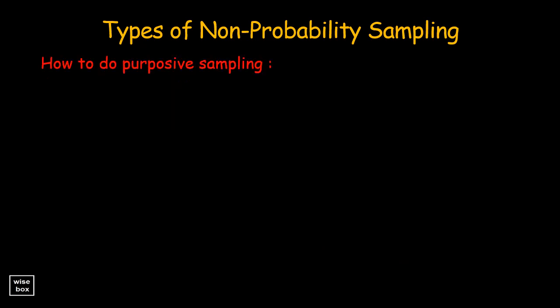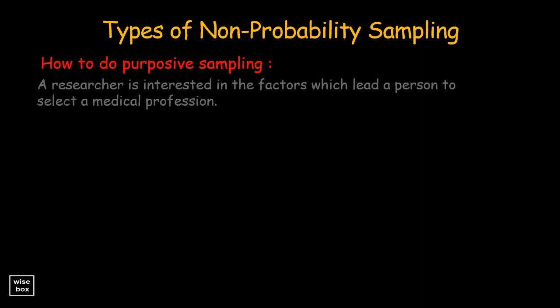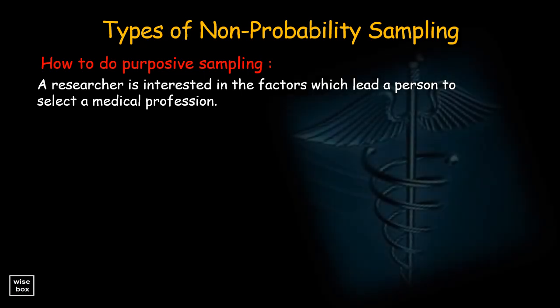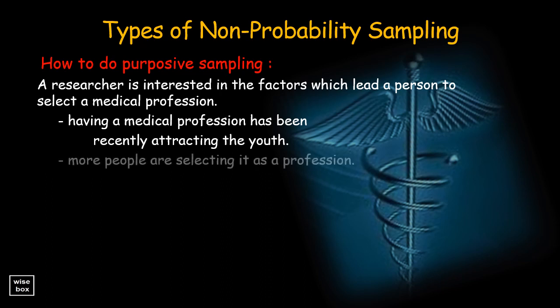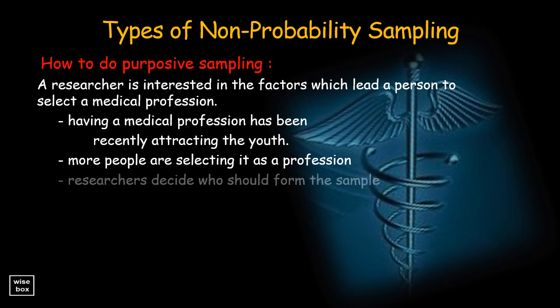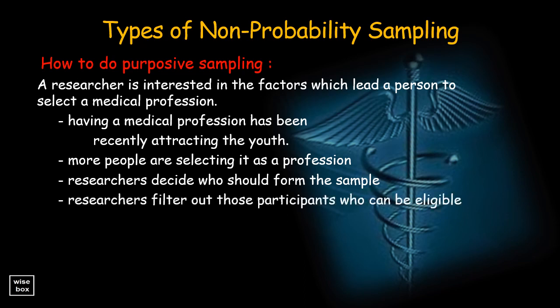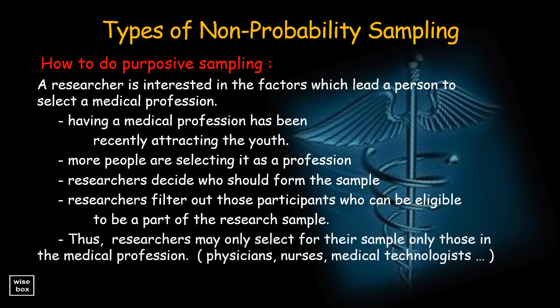Here's how to do purposive sampling. Consider a scenario where a researcher decides to understand what factors lead a person to select a medical profession. Having a medical profession has been recently attracting the youth, and more and more people are selecting it as a profession. The researchers who understand what the medical profession is will be able to decide who should form the sample. Researchers can easily filter out eligible participants — selecting only those in the medical profession, like physicians, nurses, medical technologists, pharmacists, resident doctors, medical interns, or college students under a medical-related course.